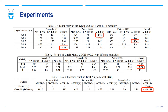As seen in Table 1, our proposed single-model CDCN achieves superior performance when theta equals 0.5, 0.7, and 0.9. From Table 2, we find that with the depth modality we can achieve better performance than other modalities. And from Table 3, our final submission result outperforms the baseline by a large margin.